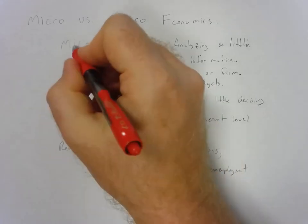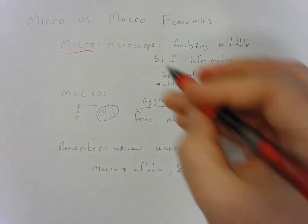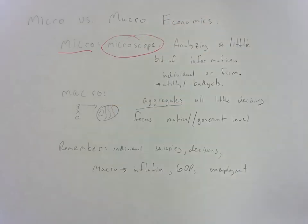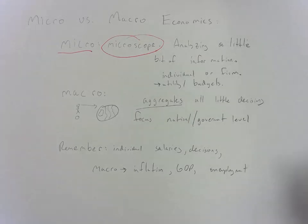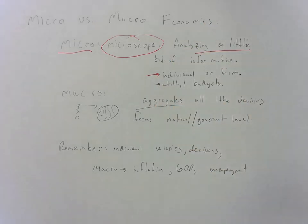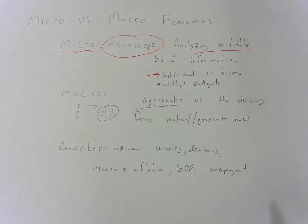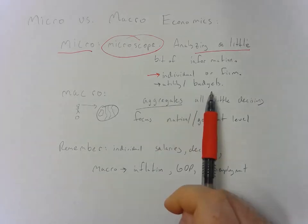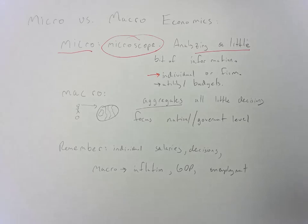So first, when we're looking at micro, the trick I like to use is to think of a microscope. What do you use a microscope for? You use a microscope to look at very fine, small, individual bits of information. So that's what you're doing in microeconomics — you're analyzing a little bit of information at a time. We're focusing on individuals, on the firm, on whether somebody wants to buy an apple or an orange and how much that apple or orange costs. We're going to be learning things like utility and budgets and individual markets and prices.